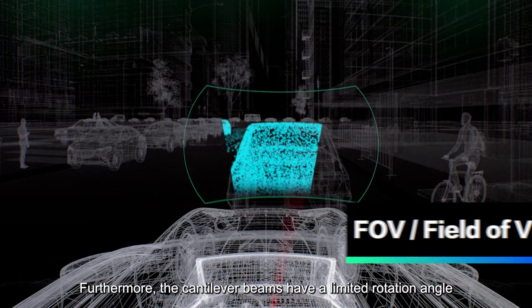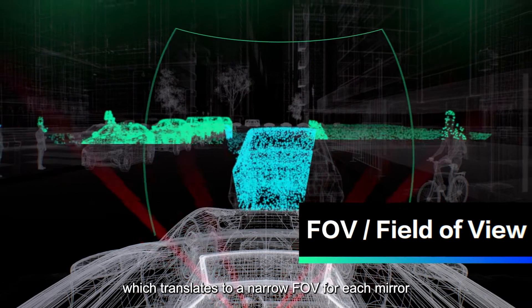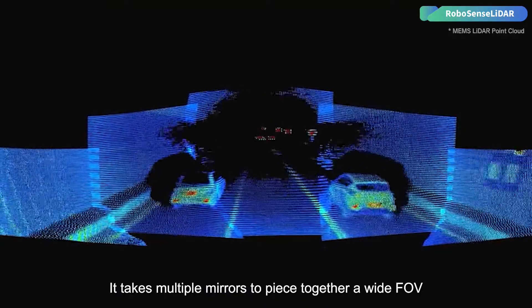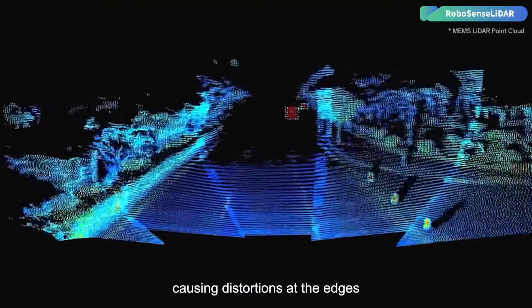Furthermore, the cantilever beams have a limited rotation angle, which translates to a narrow FOV for each mirror. It takes multiple mirrors to piece together a wide FOV, causing distortions at the edges.